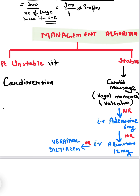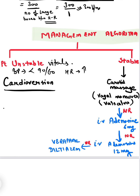If the patient comes with unstable vitals — such as blood pressure less than 90/60 and a very high heart rate — then first we have to give cardioversion.